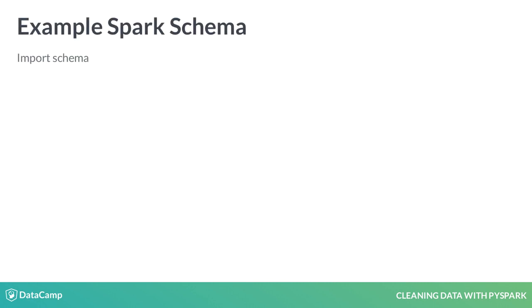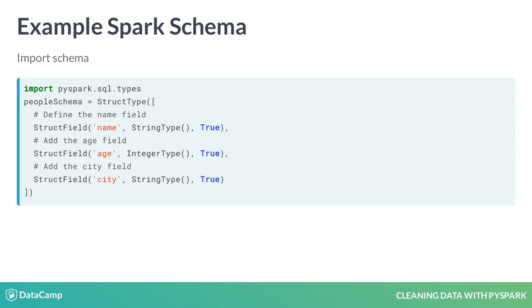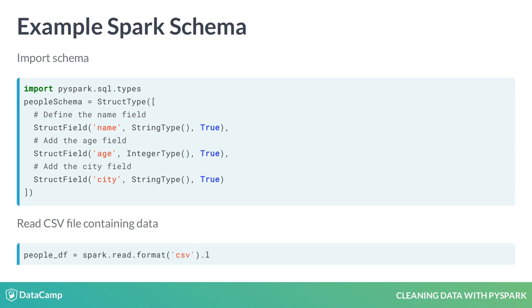Here is an example schema to import the data from our previous example. First, we'll import the pySpark.sql.types library. Next, we'll define the actual struct type list of struct fields containing an entry for each field in the data. Each struct field consists of a field name, data type, and whether the data can be null. Once our schema is defined, we can add it into our spark.read.format.load call and process it against our data. The load method takes two arguments — the file name and a schema — and this is where we apply our schema to the data being loaded.